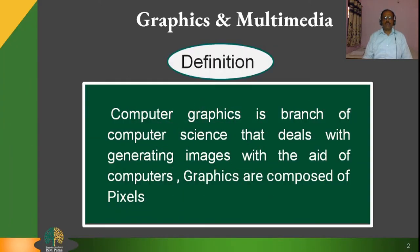Computer Graphics is a branch of computer science that deals with generating images with the aid of computers. Graphics are composed of pixels, and vector graphics are composed of paths.